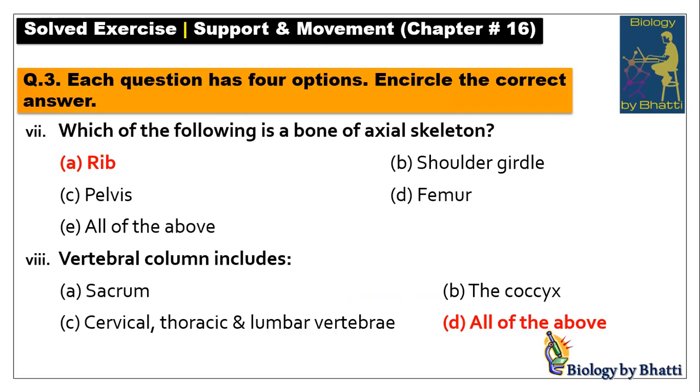The vertebral column — including sacrum, coccyx, cervical, thoracic vertebrae — are all part of the axial skeleton. So the answer is option D: all of the above.